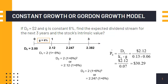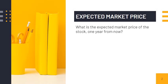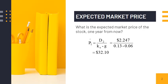Hence the intrinsic value or price of the stock today is $30.29. The intrinsic value one year from now, P-hat-sub-1, is computed as D-sub-2 ($2.247) over the difference between the required rate of return 13 percent and growth rate 6 percent, giving $32.10. Observe the pattern: when solving for P-hat-sub-0 the numerator is D-sub-1; for P-hat-sub-1 the numerator is D-sub-2; for P-hat-sub-2 the numerator is D-sub-3.